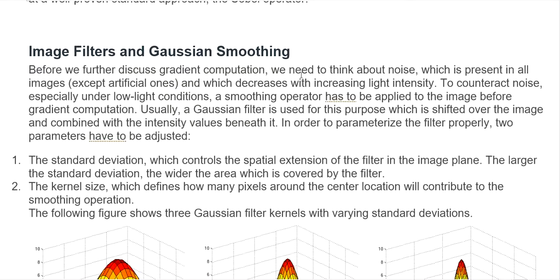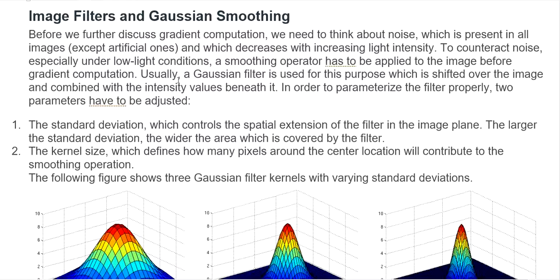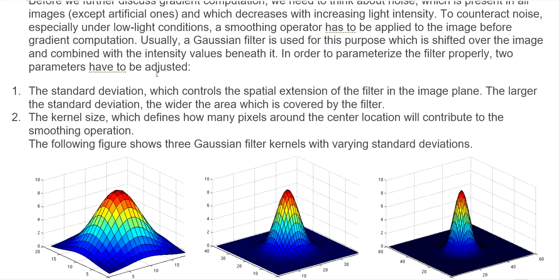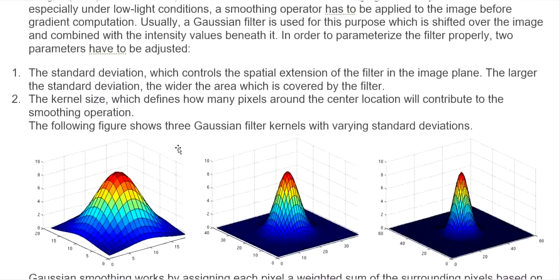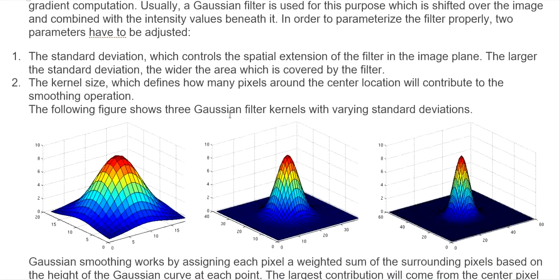We need to think about noise, which is present in all images and which decreases with increasing light intensity. To counteract noise, especially under low light conditions, a smoothing operator has to be applied to the image before the gradient computation. Usually we use a Gaussian filter for this purpose, which slides over the image and combines intensity values beneath it. Two important parameters of the Gaussian filter are the standard deviation, which controls spatial extent in the image plane, and the kernel size, which defines how many pixels around the center contribute to the smoothing operation.